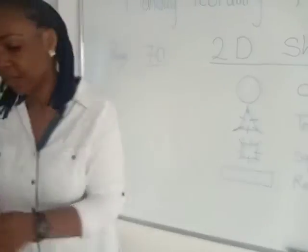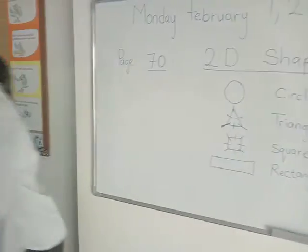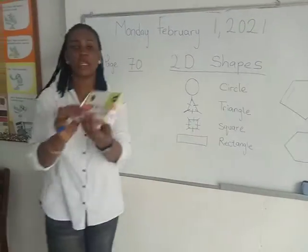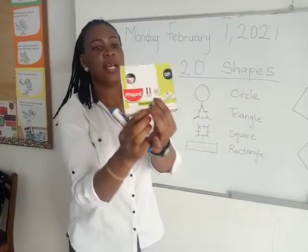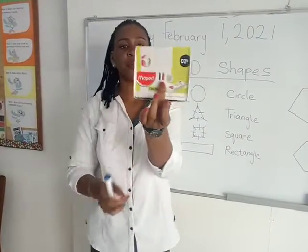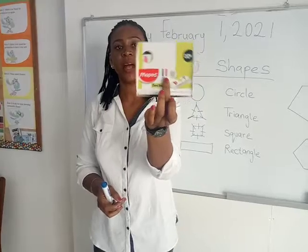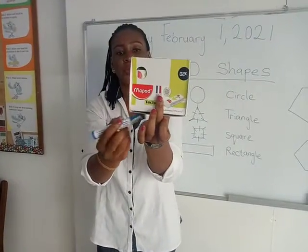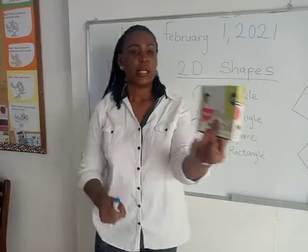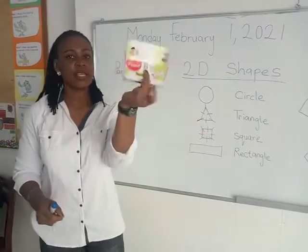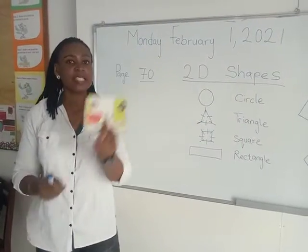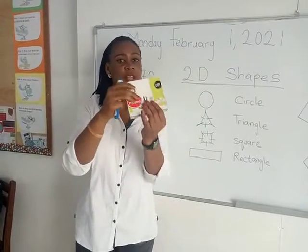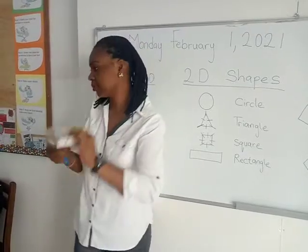Here is an example of an object in the classroom that has the shape of a square. Look around your house and find an object that has the shape of a square.